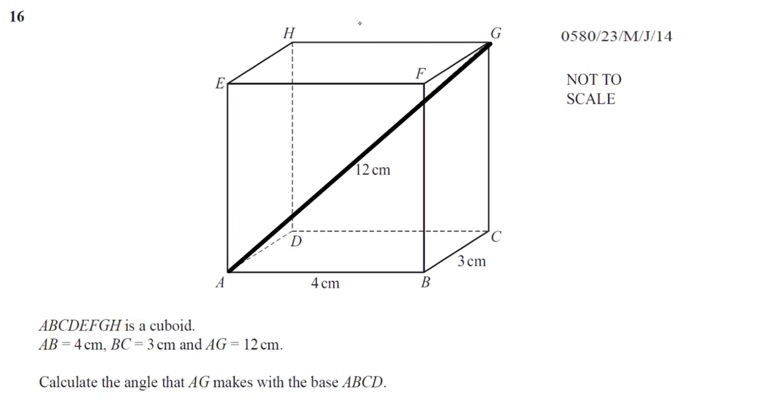One way you can think of it as if you had a light shining from, in this case above, perpendicular to the plane. Where would the shadow of that line fall on that plane? You can see it would fall between A and C. That is the angle, therefore. The angle made between these two lines is the angle between the line and the plane.